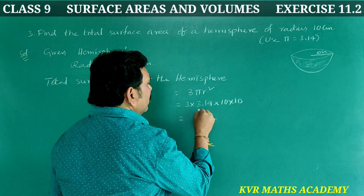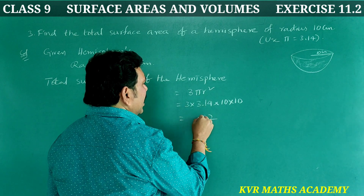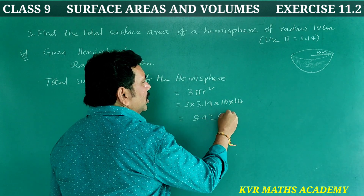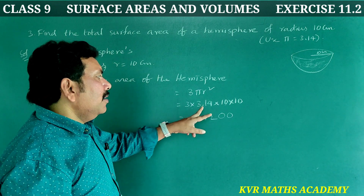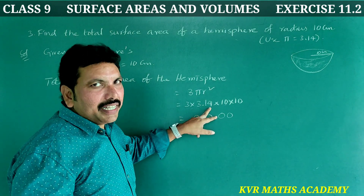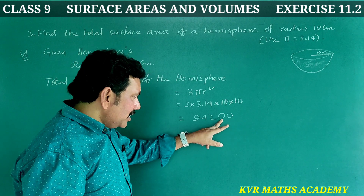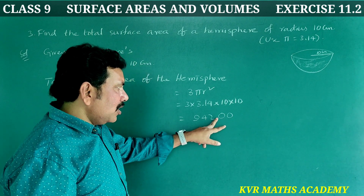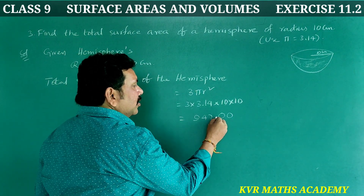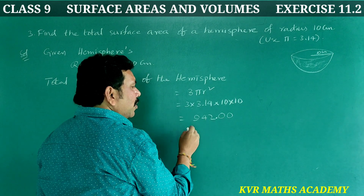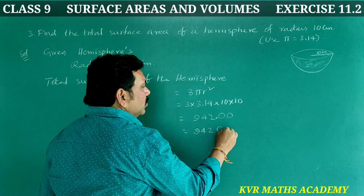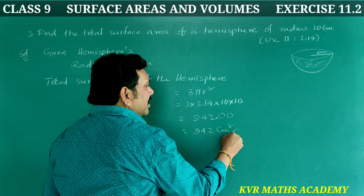Calculating: 3 × 3.14 × 100. 3 × 3.14 = 9.42, then multiplying by 100 gives 942. That is equal to 942 cm².